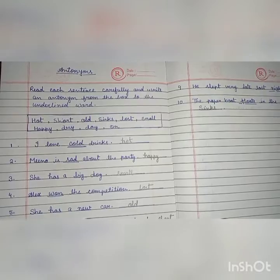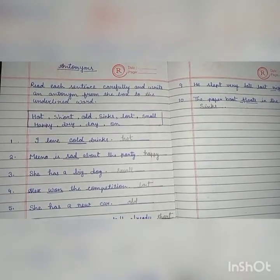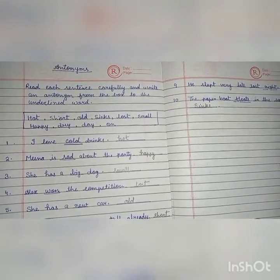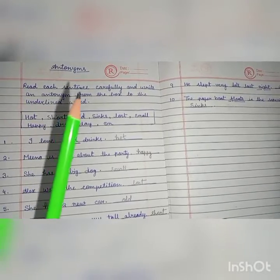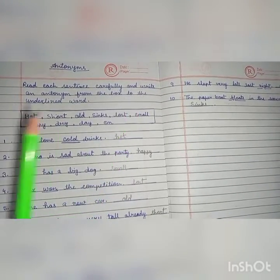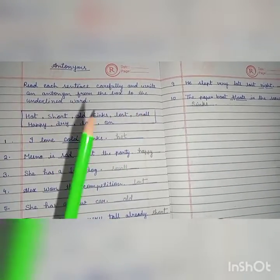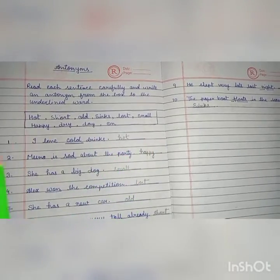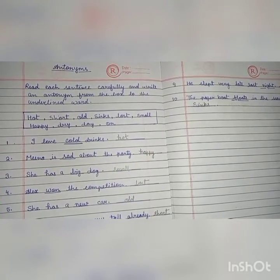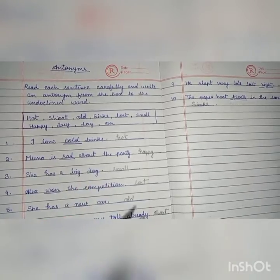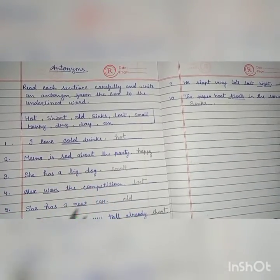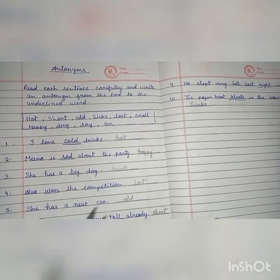Hope aap ko samaj mei aya hooga — Antonyms kisai bolte hai. Now, ismei kuch exercises hai jo ki humi aaj karne hai. Let's get started. Pahale instructions pardte hai. Instructions dekhiye kya hai: Read each sentence carefully and write an antonym from the box for the underlined words. Yaha pe ek box bana hai, usmei kuch words diye hai, jo ki humi fill karna hai accordingly, jo sentences hai uske according.